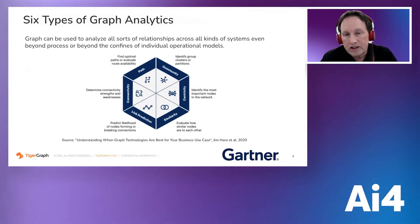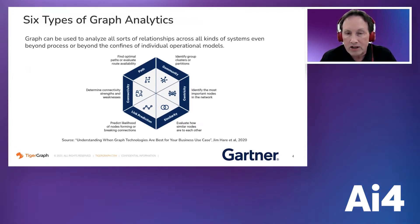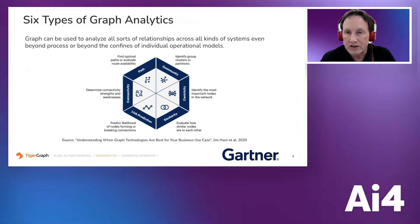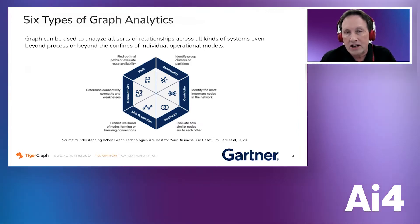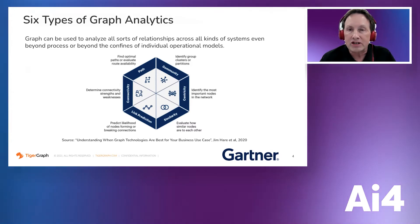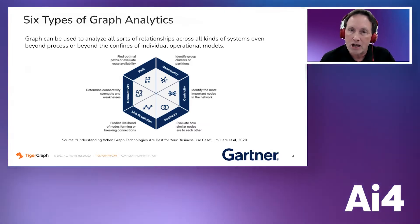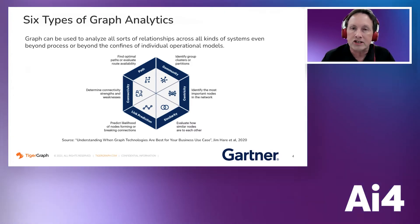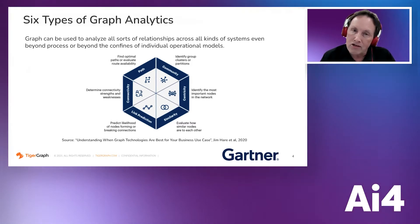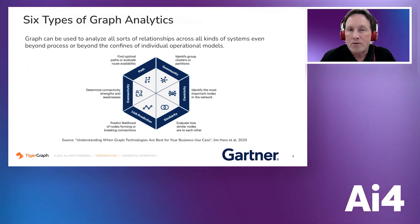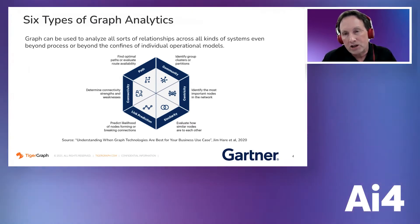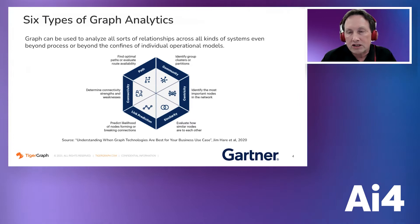One of these reports, called 'Understanding When Graph Technologies Are Best for Your Business Use Case,' describes six different types of graph analytics. We'll go around this hexagon starting at the upper left with path: how do we find optimal paths or evaluate route availability? Community: where are the clusters, what are the areas of focus?